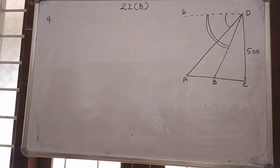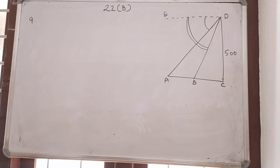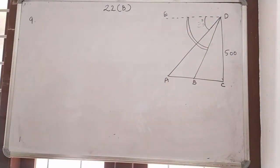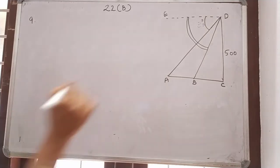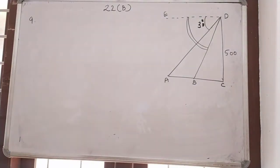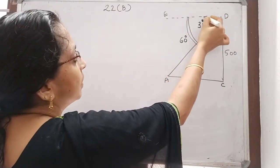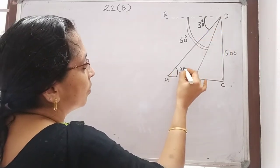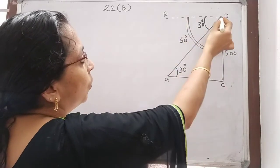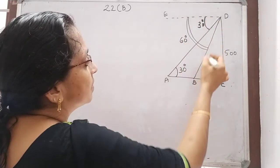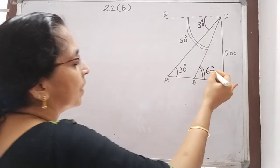Height of the cliff is given as 500 meters. A man on a cliff observes a boat at an angle of depression 30 degrees, so we can mark it as 30 degrees. 3 minutes later, the angle of depression of the boat is found to be 60 degrees. Angle of depression 30 degrees means this angle will also be 30 degrees, since these two are parallel lines and this one is the transversal, so alternate angle concept we can apply. Here this is 60 degrees, so this also will be 60 degrees by alternate angles concept.